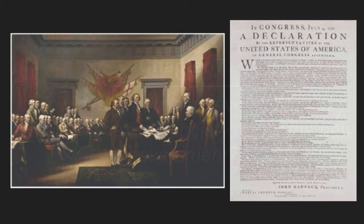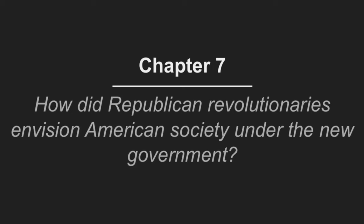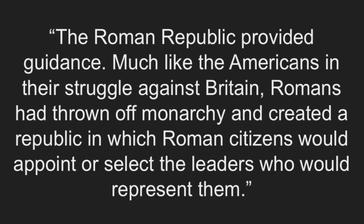Question 7: How did Republican revolutionaries envision American society under the new government? Under the new government, Republican revolutionaries envisioned American society to follow that of the Roman Republic. According to U.S. History by OpenStax, the Roman Republic provided guidance. Much like the Americans in their struggle against Britain, Romans had thrown off monarchy and created a republic in which Roman citizens would appoint or select the leaders who would represent them. Based on this, the Republican revolutionaries envisioned a society in which they would appoint their representatives.